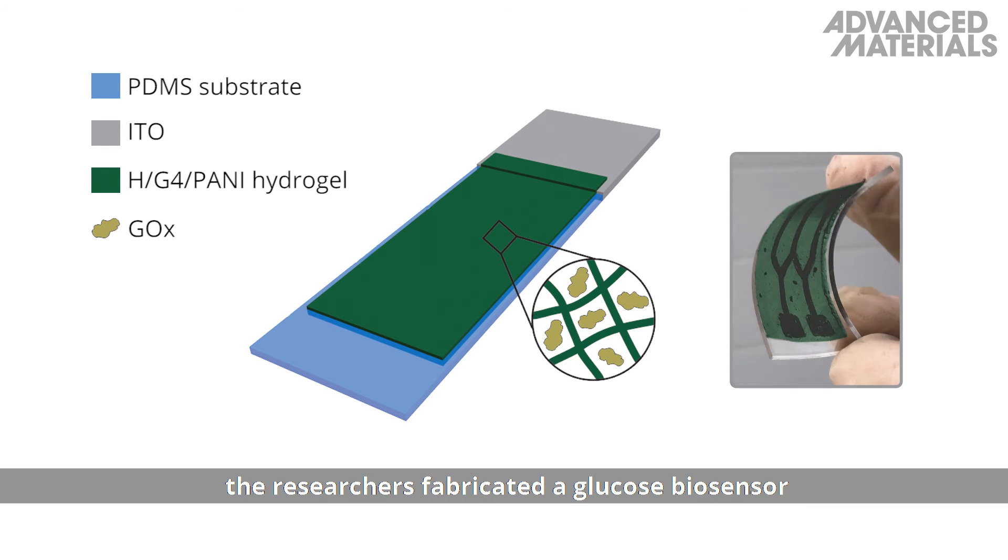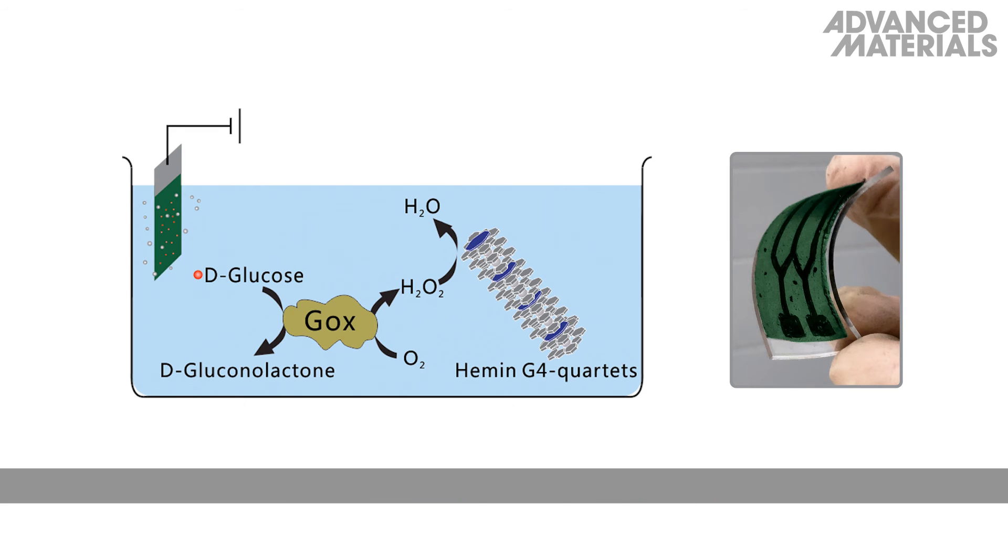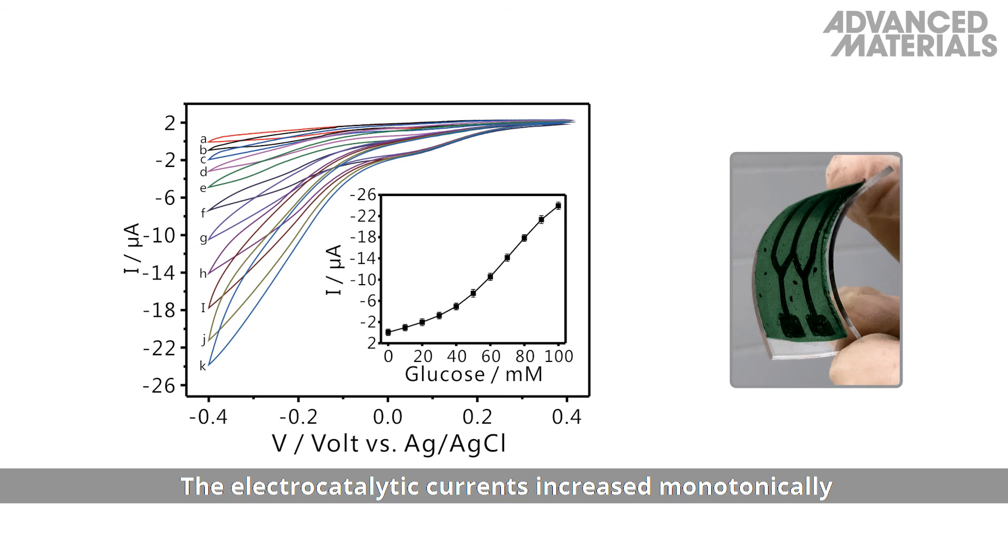The researchers fabricated a glucose biosensor by loading glucose oxidase enzyme into the hybrid hydrogel. The electrocatalytic currents increased monotonically for the glucose oxidase-loaded hybrid hydrogel under different concentrations of glucose, demonstrating its potential as a glucose sensor.